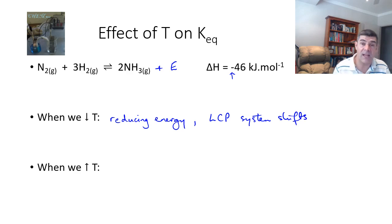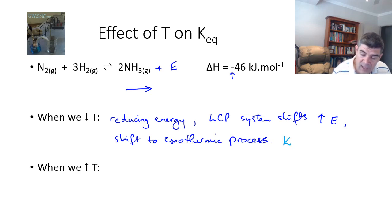So if we drop the temperature, we reduce the energy, the shift is to increase the energy, and that means that this will go to the right. So therefore, a shift to exothermic process. And in the example that we have above, the value of K would increase because we're increasing the concentration of the products.